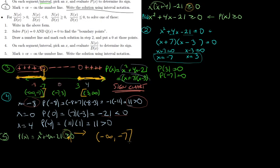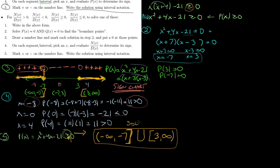The solution is (−∞, −7] ∪ [3, +∞). Note that −∞ and +∞ always use parentheses since infinity is not a number. This is the complete set of values satisfying the original inequality.